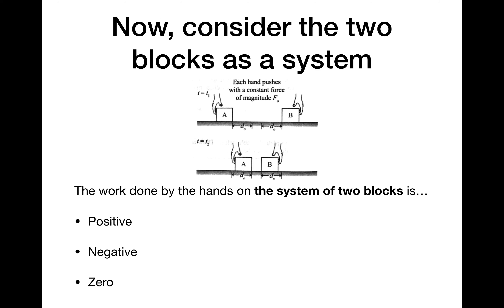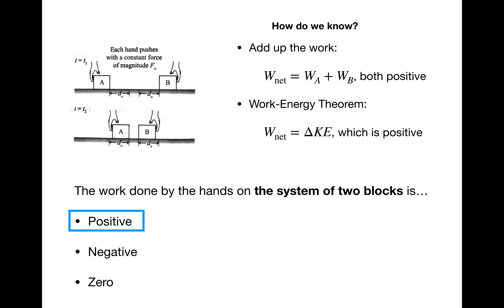Now let's consider the two blocks as a system. The total work done by the hands on the system of two blocks is positive. It's easy to fall into a trap and say that the work done in each case would cancel out because the blocks are moving in different directions. But the work done on block A is positive and the work done on block B is positive, so when we add two positive numbers together we still get a positive total for the net work on the system.